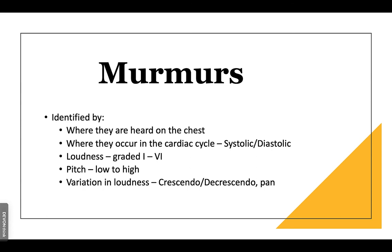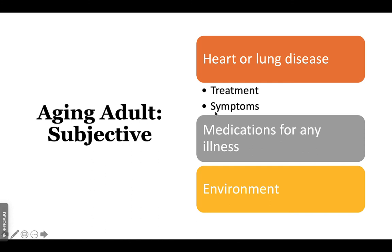Murmurs are best heard over the defective valve. Note whether they are systolic or diastolic, and grade the loudness on a scale of one to six — one being very soft, six being audible without a stethoscope. For the aging adult, ask about any history of heart or lung disease, prior treatment, residual symptoms, current medications, and environmental exposures. Patients who have had certain chemotherapy regimens are at significant risk for developing heart disease later — all history is pertinent to the cardiovascular system.